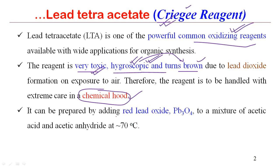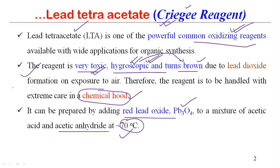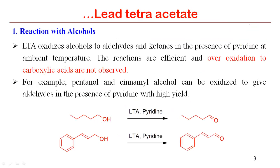For preparation, we should add red lead (Pb3O4) to a mixture of acetic acid and acetic anhydride at minus 70 degrees. This way we can prepare lead tetraacetate. The synthesis is relatively straightforward, but there are important things to remember, especially regarding handling.